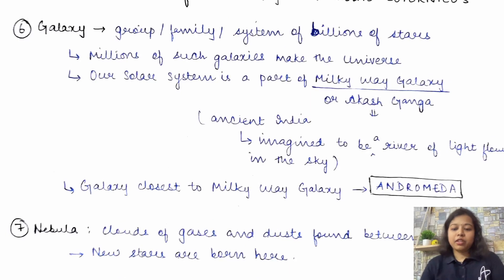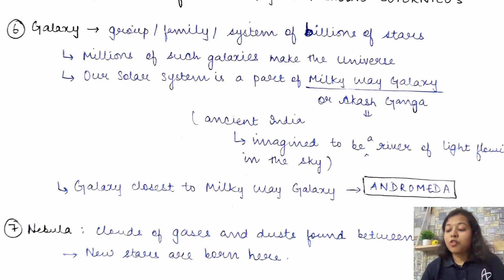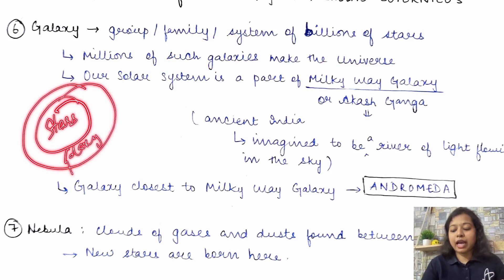Ab to ye easy-easy terms the, jo mostly humein pata hota hain. Now, the main term figures out. That is, galaxy. You must have heard about it. But let's try to understand the term. Galaxy is a group of billions of stars. Group ka lo, family ka lo, ya system ka lo. Anything that you would like to call it as. So, galaxy is a group of billions of stars. Bahut sare billions and billions and millions of stars ki jo grouping hogi, unko hum galaxy kahenge. Jab bahut sare aisi, millions of such galaxies jab aapas mein mil jayenge, that will make the universe. So, you will have stars. Khub sare star milke kya bana denge galaxy. Aur khub sare galaxy milke kya bana denge universe.